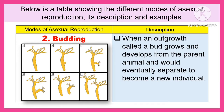The second one is budding. An outgrowth called a bud grows and develops from the parent animal and would eventually separate to become a new individual.